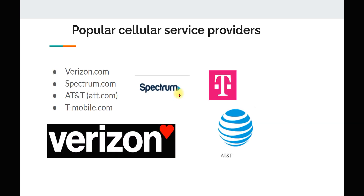Popular cellular service providers include Verizon.com, Spectrum.com (formerly Time Warner Cable), AT&T, and T-Mobile.com. There are many others, but these are the most common ones.